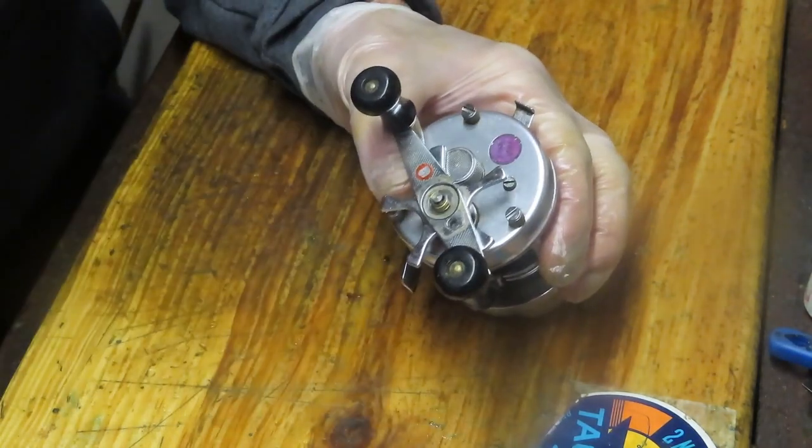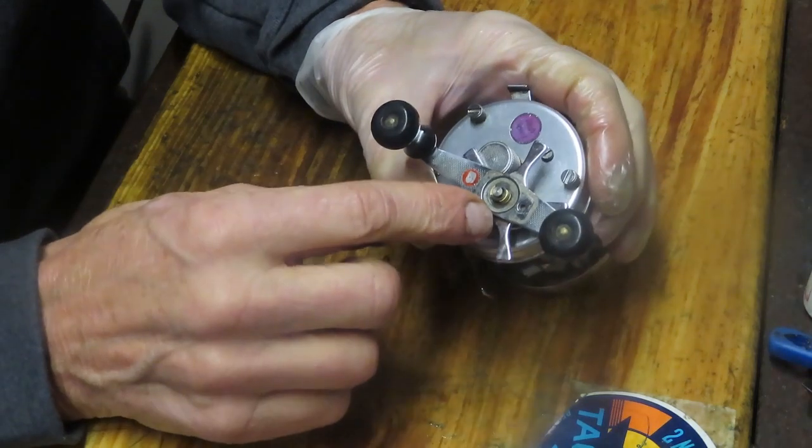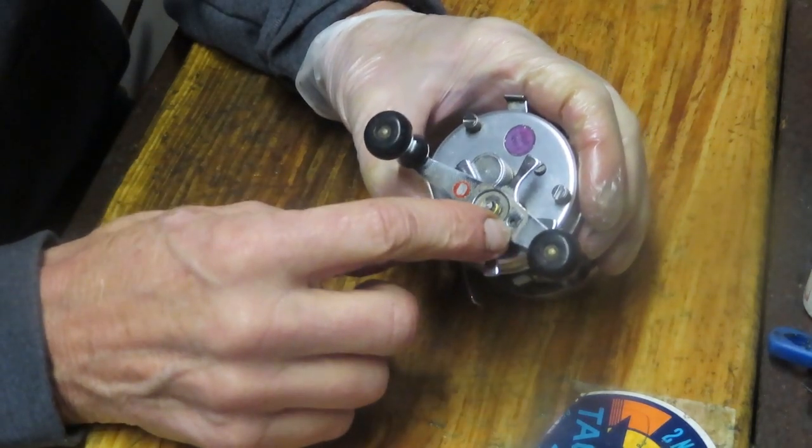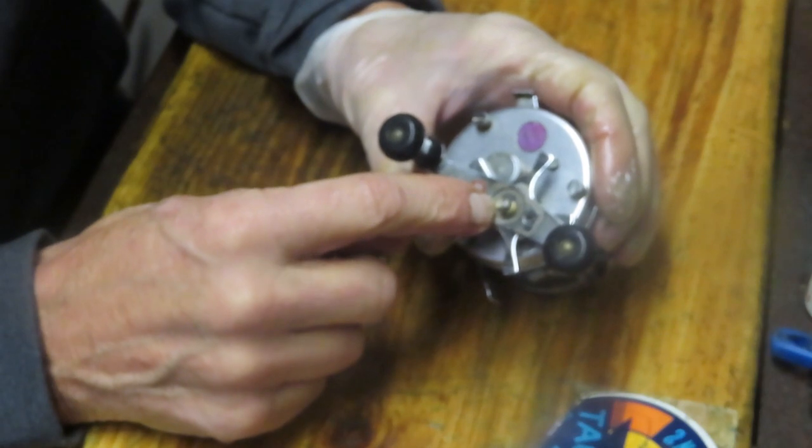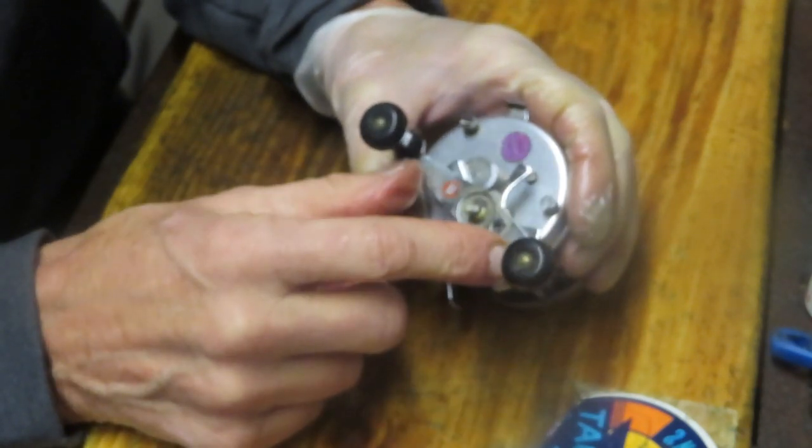We're going to start servicing this by taking off the exterior pieces. You saw me remove the tie-down clip by taking out the handle screw and then removing the nut cap that holds all of this down.